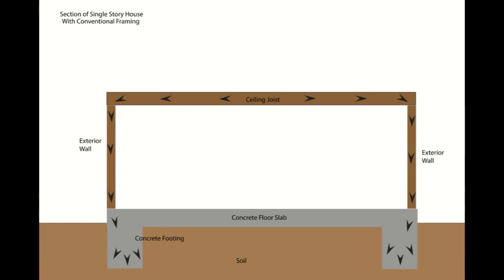Here's a picture of a non-bearing wall. Don't be confused — just because the weight is being distributed around this wall and not going through it doesn't mean it's a wall you can remove. It could actually be another structural member of the home. This is where a lot of homeowners and do-it-yourselfers get confused — they think they can remove a wall, cut into it, and all of a sudden their building starts to lean. A non-bearing wall simply means it does not have a structural footing underneath it.